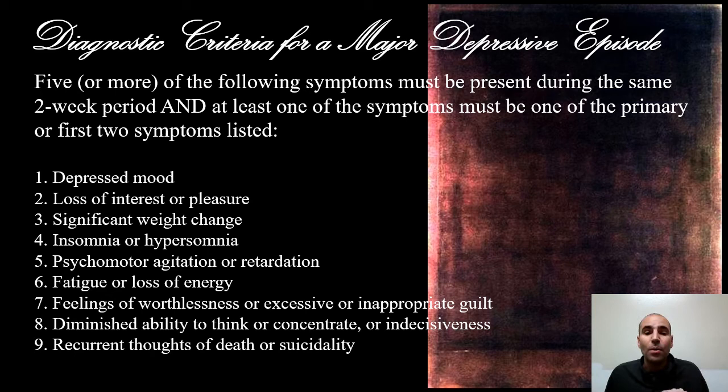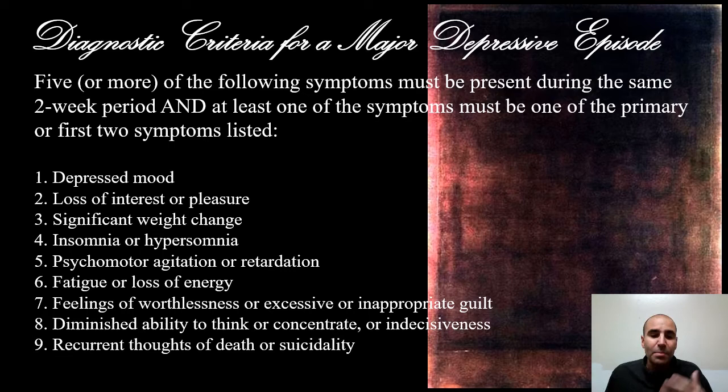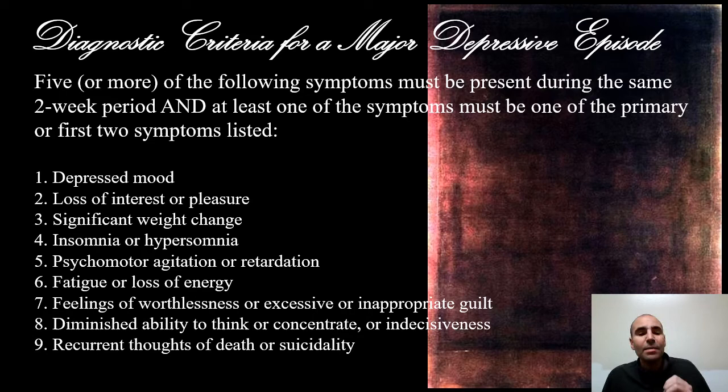Hypomania can occur in Bipolar 1 but must occur in Bipolar 2. In Bipolar 1, a major depressive episode does not need to occur, nor does a hypomanic episode, though they commonly do. The rare Bipolar 1 individual is purely manic, and most purely manic individuals will be men. The depressive criteria are the same as for major depressive disorder: five or more of nine symptoms for a two-week period, with at least one being depressed mood most of the time or loss of interest or pleasure.